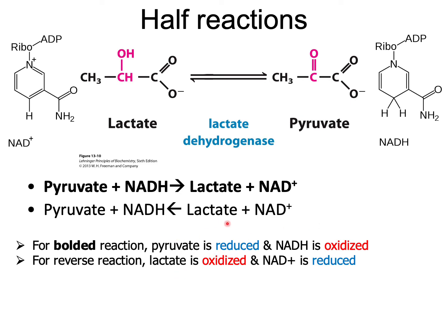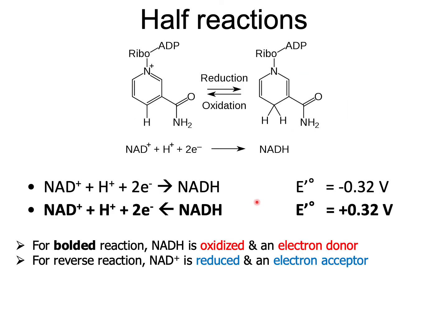For the reverse reaction, lactate when treated with NAD+ gets oxidized, and NAD+ in this case gets reduced. Looking back at the table, the E0 value for conversion of NAD+ to NADH is minus 0.32 volts, and the reverse reaction is plus 0.32 volts. For the bolded reaction going from NADH to NAD+, NADH is oxidized and is an electron donor, and it actually donates electrons as hydride. For the reverse reaction, NAD+ is reduced and is an electron acceptor.